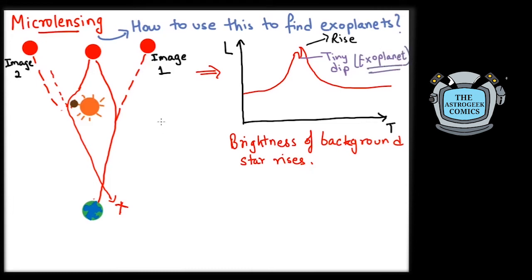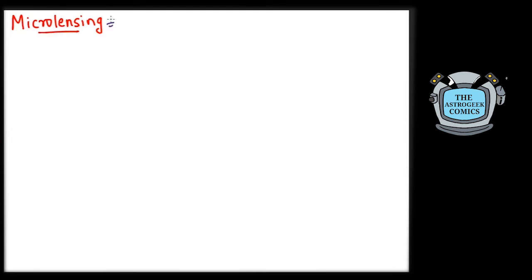This brief dip is indicative of the presence of an exoplanet. A larger dip will be due to a more massive planet. Microlensing term arises from this small lensing effect of the planet. Microlensing has been very important in discovering rogue planets too.